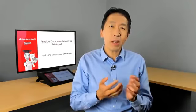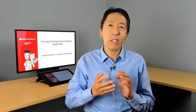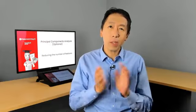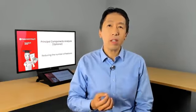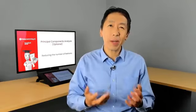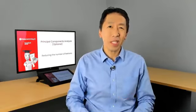So PCA, principal components analysis, is an algorithm that lets you take data with a lot of features, 50, a thousand, even more, and reduce the number of features to two features, maybe three features so that you can plot it and visualize it. It's commonly used by data scientists to visualize their data, to figure out what might be going on. Let's take a look at how PCA, principles components analysis works.